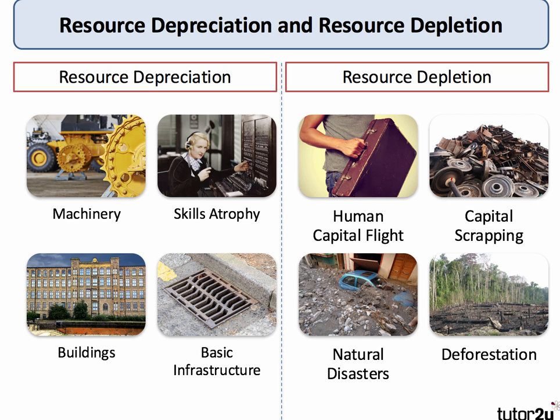Resources can also deplete — a key cause of an inward shift of the PPF. People can leave the country — human capital flight. Factors of production can be wiped out by natural disasters or manmade problems such as deforestation or overgrazing of common land. Capital can be scrapped when businesses fail in a recession or depression. It's important to distinguish between resource depreciation and resource depletion — both are negative for a country's PPF.